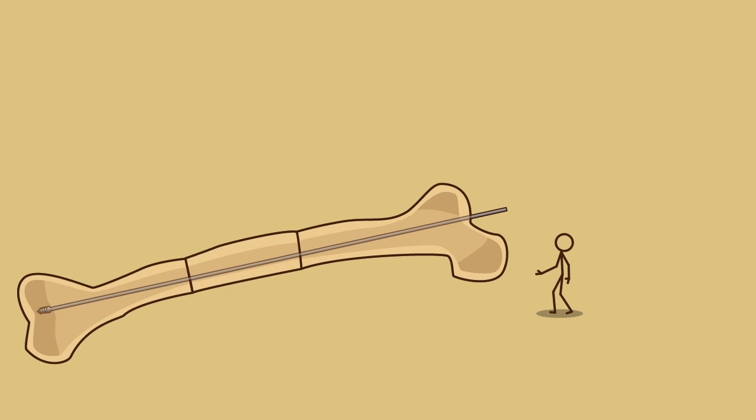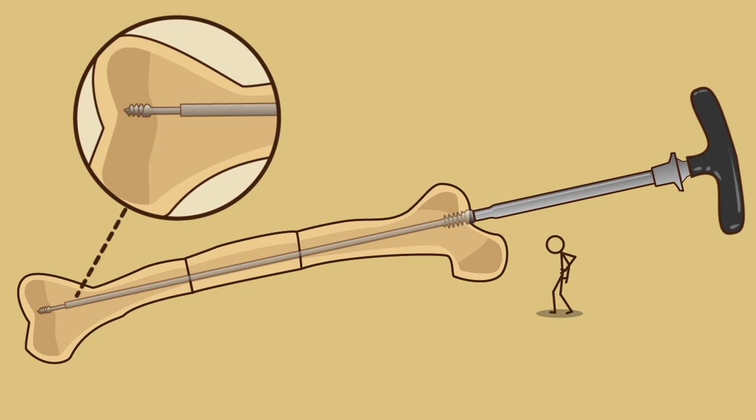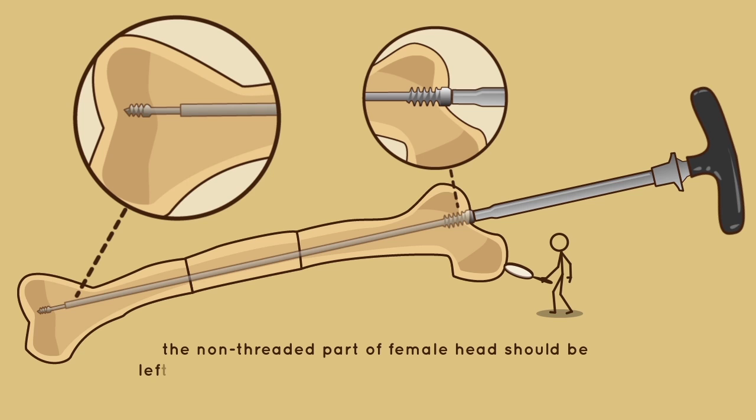Female component insertion. The female component is screwed into the greater trochanter using the female driver. The threaded portion of the female head should be inserted in bone at least one to two threads, whereas the non-threaded part of the female head should be left within the non-ossified part of the greater trochanter.